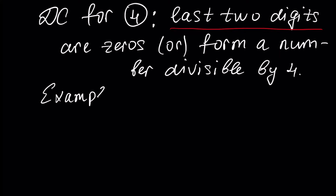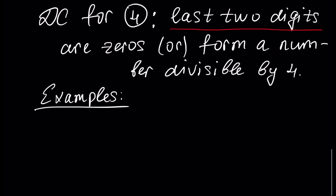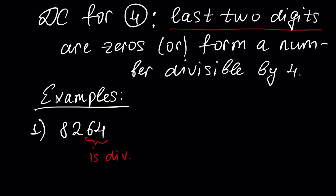First example: is 8264 divisible by 4? The answer is yes, because 64 is divisible by 4. So our big number 8264 is divisible by 4 because 64 is divisible by 4.